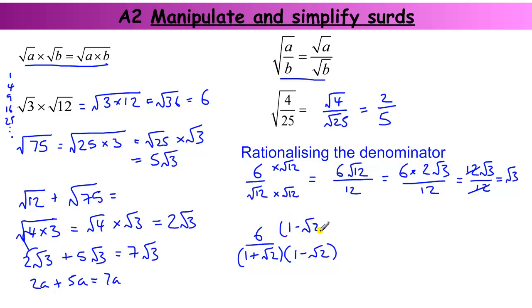Do the same to the top. And I end up with six lots of one, which is six, minus six lots of root two all over. And I've got to multiply this thing out.